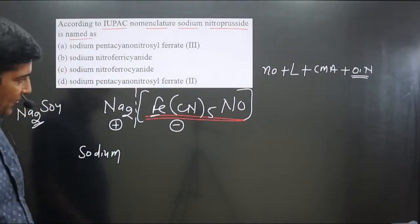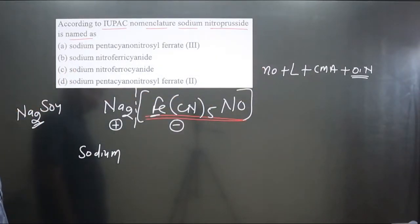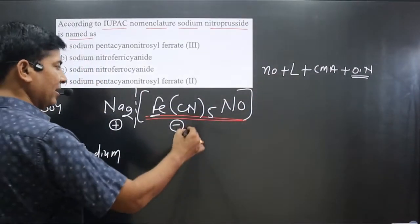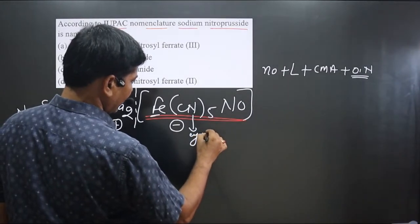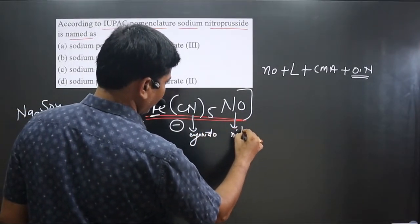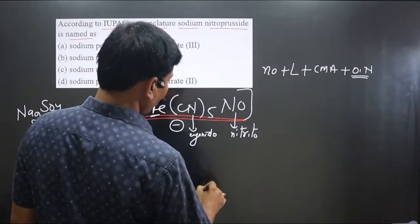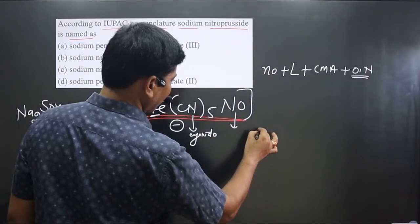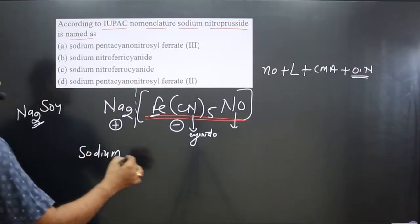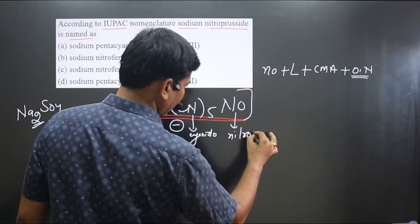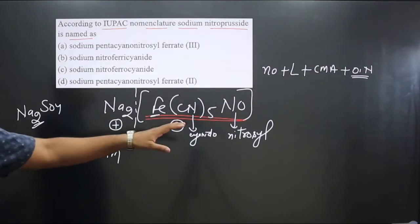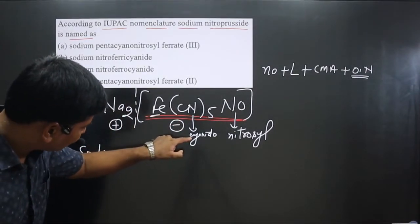We have an anionic complex with more than one type of ligand, so we follow alphabetical order. The two ligands are cyanido (CN⁻) and nitrosyl (NO⁺). Nitrosyl is a positive ligand — very rarely do we have a positively charged ligand. Both start with 'n' and 'c', so alphabetically cyanido comes first.